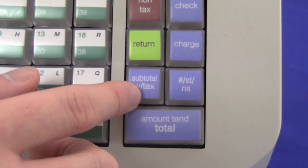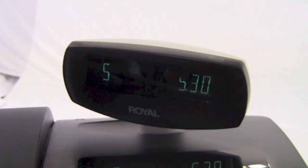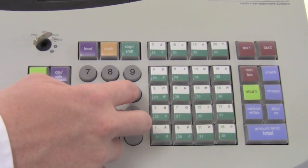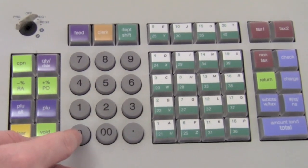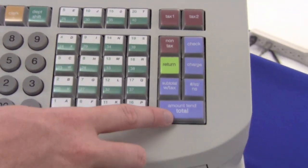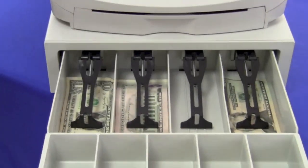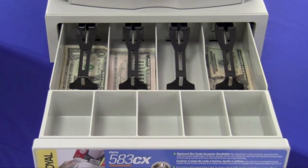The machine will then calculate subtotal with tax, display the price on the customer screen. To finalize your cash transaction, type in the amount paid, press the total key. This will then open up the cash drawer and print a receipt.